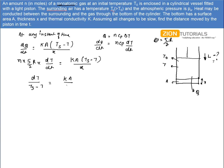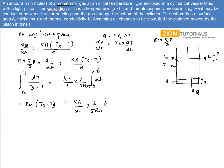Rearranging: KA/X times 2/(5RN) dt = dT/(Ts - T). Integrating with time from 0 to T and temperature from T0 to T, we get the natural log of (Ts - T)/(Ts - T0) with a negative sign, equal to KA/X times 2/(5RN) times t. So (Ts - T)/(Ts - T0) equals e to the power of minus 2KAt/(5RN).